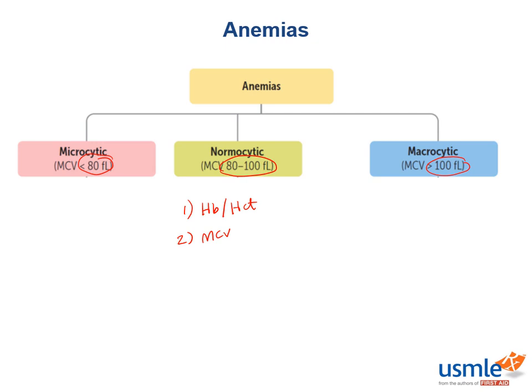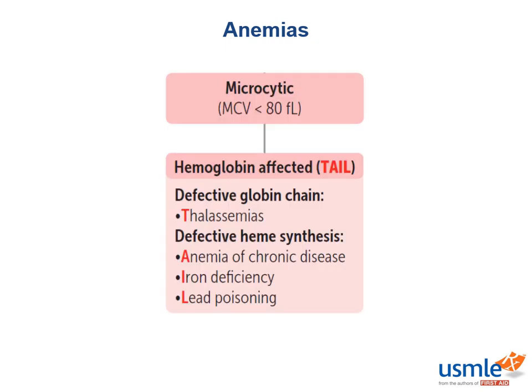Let's start by talking about microcytic anemias — we have an entire video dedicated to this topic. Remember when I said that red blood cells are pretty much entirely made up of hemoglobin? A microcytic anemia is an anemia with smaller red blood cells, so if the red blood cell is smaller, the problem is hemoglobin. We can remember these anemias with the mnemonic TAIL: thalassemias, anemia of chronic disease, iron deficiency, and lead poisoning.